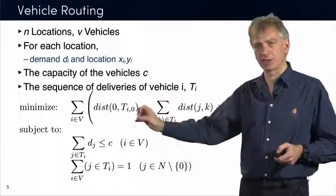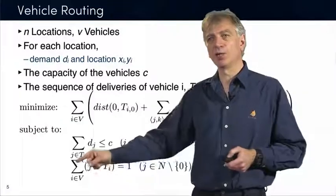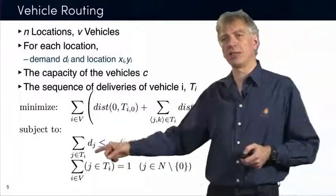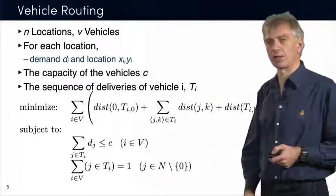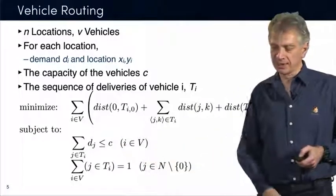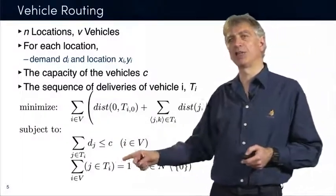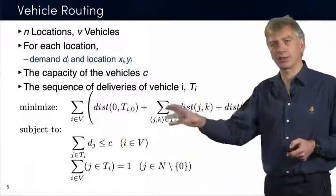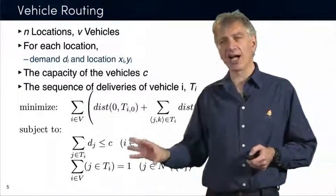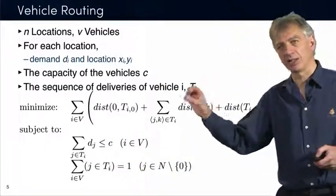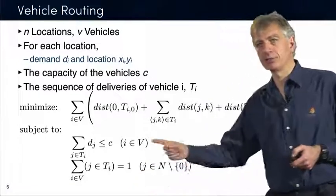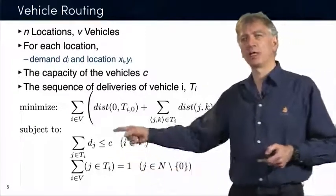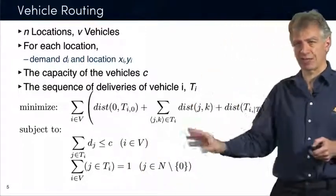You want to be sure that every one of the locations is visited exactly once. The constraint says: for a particular location J, the indicator that J belongs to tour TI tells you if that location is visited by vehicle I. When you sum over vehicles, that has to be equal to one. There are no real solvers that I know which would actually express that constraint directly as stated here.